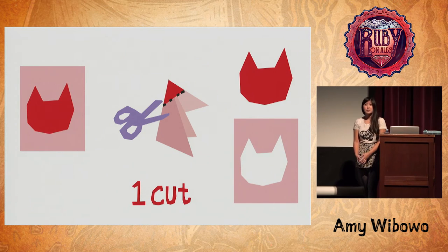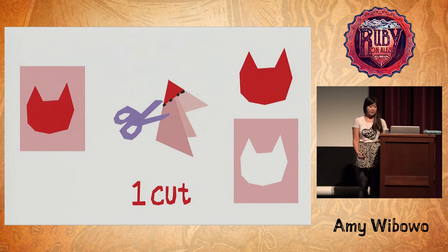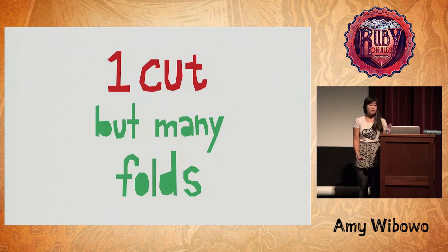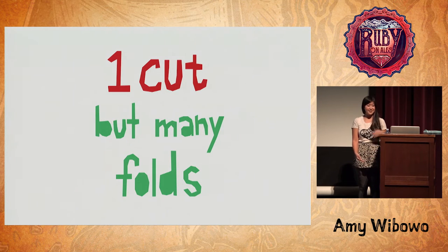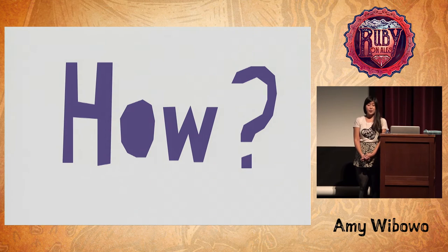To reiterate this theorem again in cartoon form: you can generate any polygonal shape from a piece of paper with a single cut. You might just need to fold the paper a lot of times before you make the cut. So then the question becomes, assuming that this is true, how and where do we fold the paper before we make the single cut to make this possible?